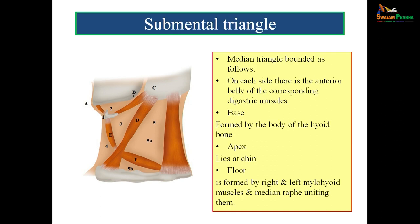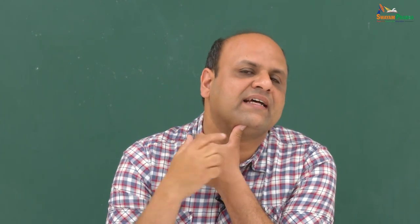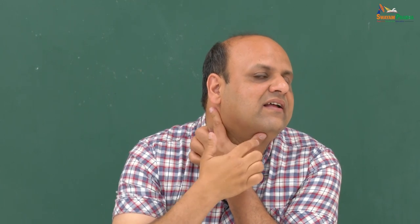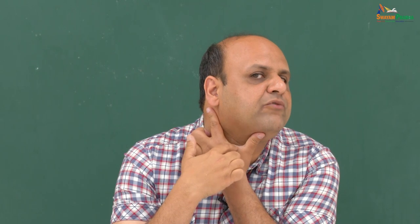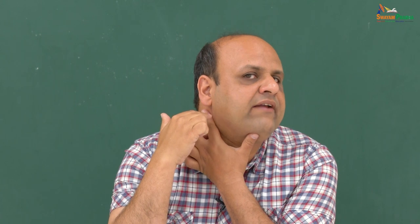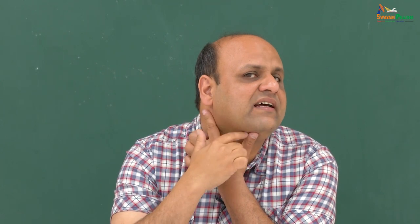One of the triangles is the submental triangle. In relation to the mandible anteriorly there is a fossa called the digastric fossa. The anterior belly of digastric is represented by my thumb and the posterior belly by my index finger. Taking the base of the mandible into consideration, this area represents the digastric triangle. The junction between both fingers is the hyoid bone, and the imaginary line from the base of the mandible to the mastoid process demarcates the digastric triangle.